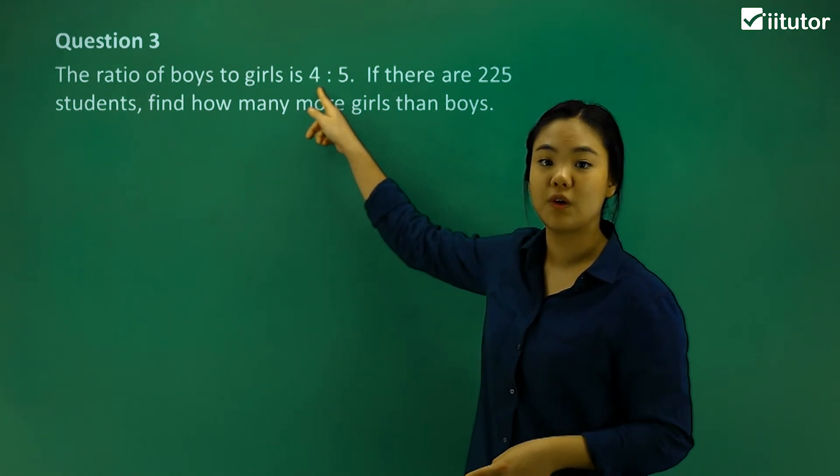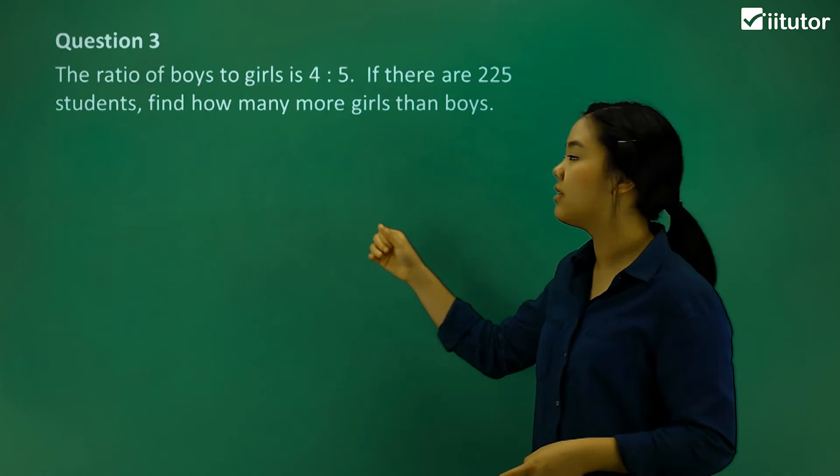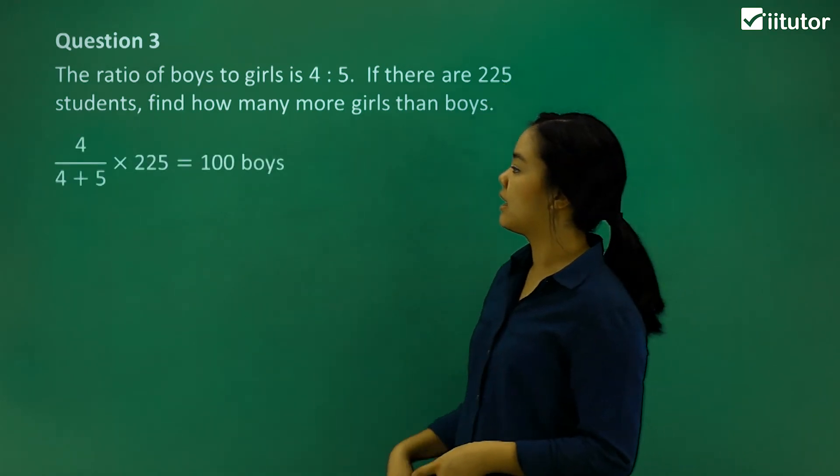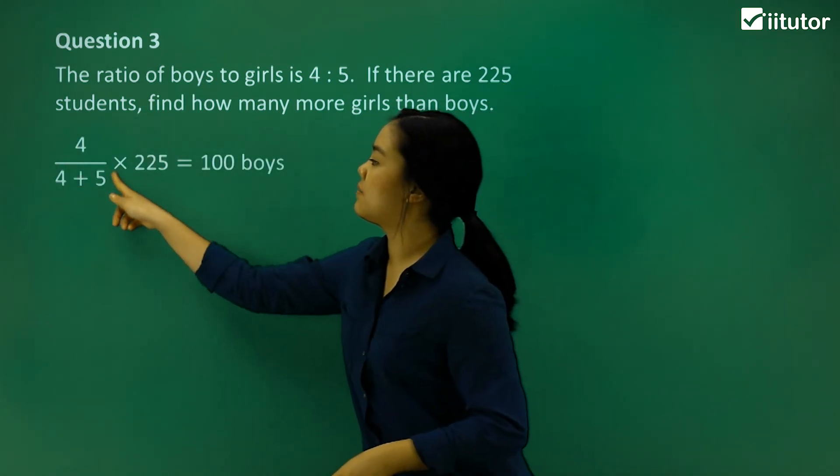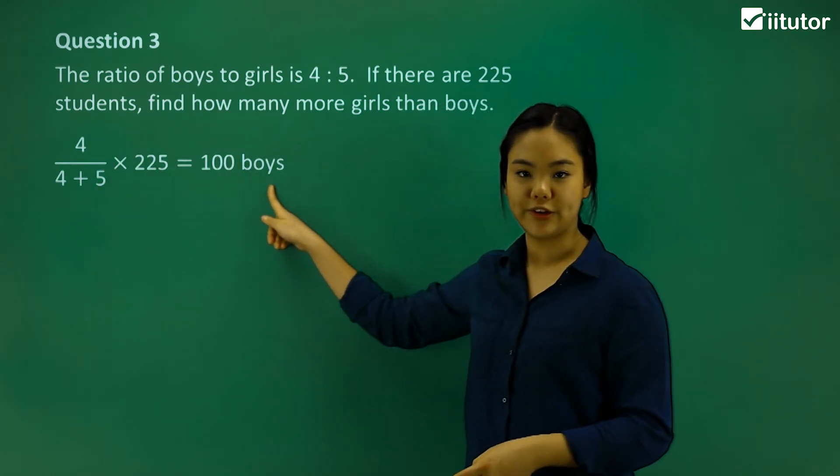So that's 4 out of 4 plus 5, right? And then we times that by 225. Okay, does that make sense to find out how many boys there are? We have 100.